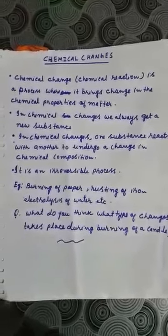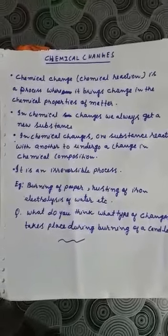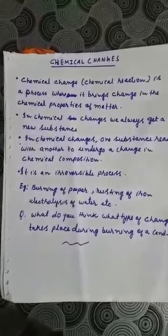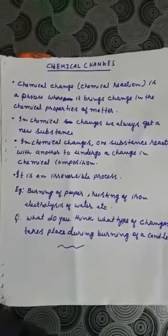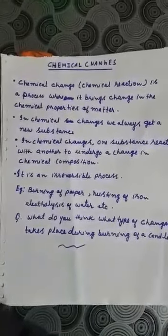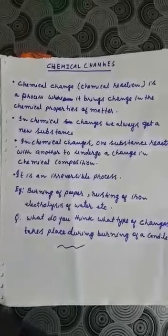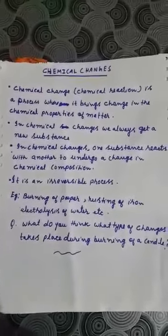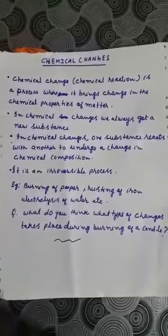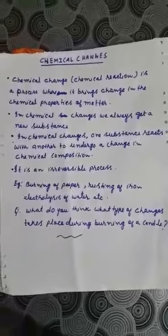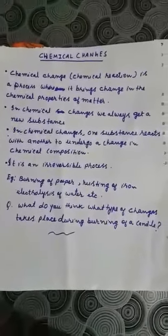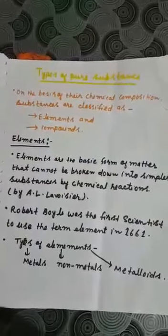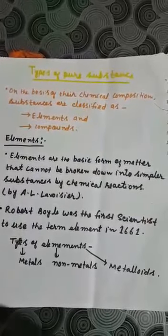What type of change takes place during burning of a candle? When you burn a candle, it seems like the candle is melting, so it appears to be a physical change — but at the same time, burning takes place in the presence of oxygen. So chemical changes are also going on. Burning of a candle is both a physical and a chemical change.